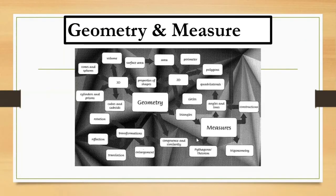Let's continue with the next subtopic: Geometry and Measure. Under Geometry and Measures, you have cones and spheres, volume, surface area, perimeter, polygons, triangles, angles of lines, constructions, and the three transformations — reflection, translation, rotation — and also enlargement.